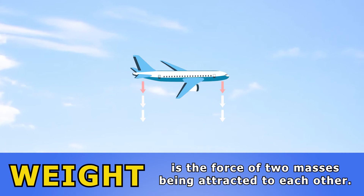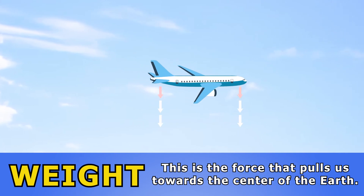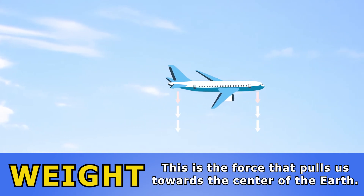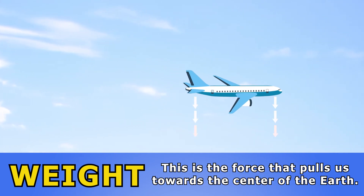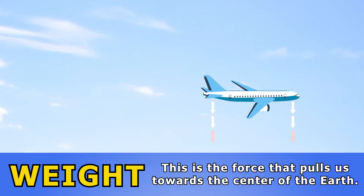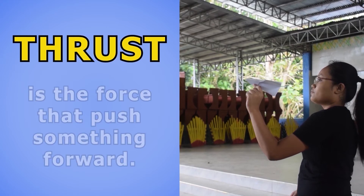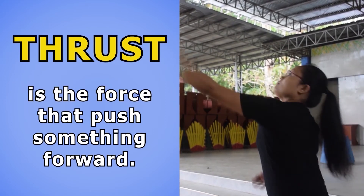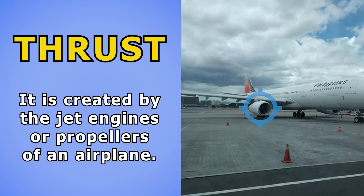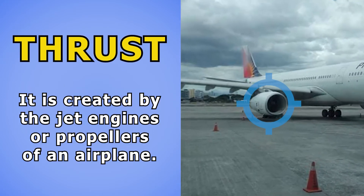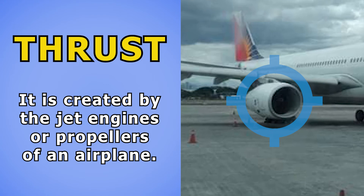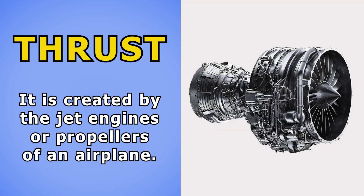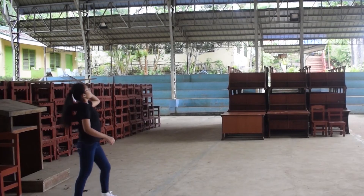The second force is weight. It is the force of two masses being attracted to each other — the force that pulls us towards the center of the earth. Thrust is the force that pushes something forward. It is created by the jet engines or propellers of an airplane.